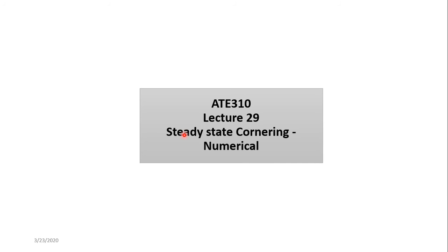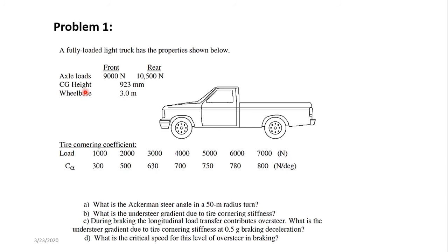In this lecture we are talking about steady-state cornering numerical problems — that means how to calculate the gradients and what types of problems can be asked. The question is: a fully loaded light truck has the properties shown. The front axle total load is 9,000 Newton, the rear side total load is 10,500 Newton, CG height is 923 mm, wheelbase is 3 meters, and the tire cornering coefficient is given in a table showing different values of load and cornering stiffness.